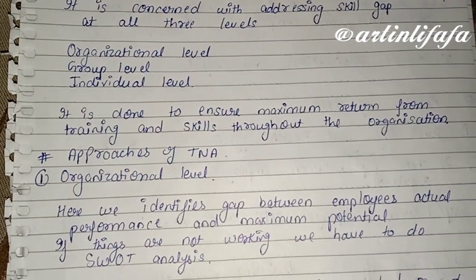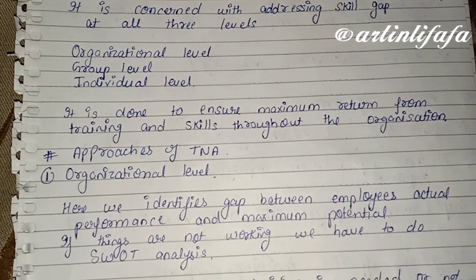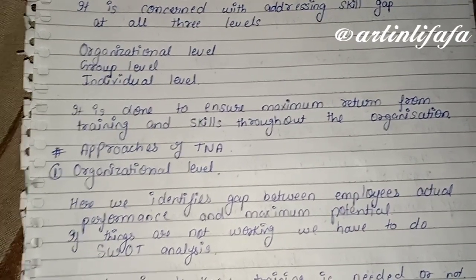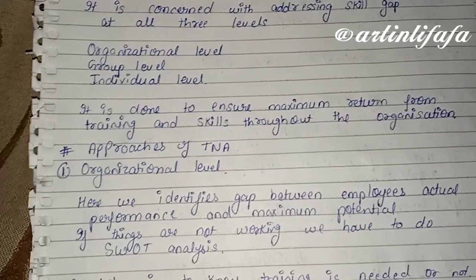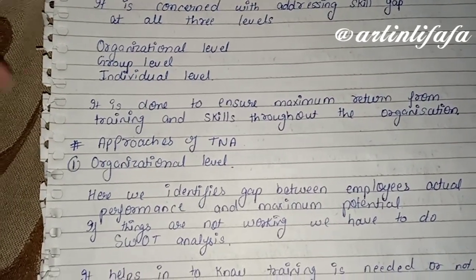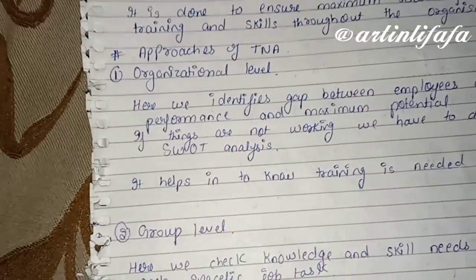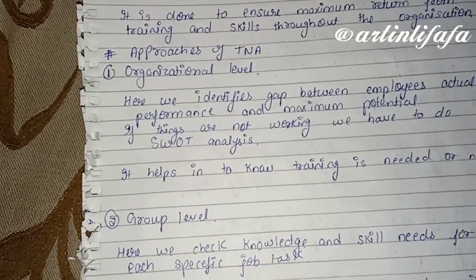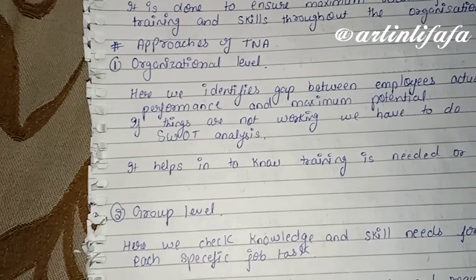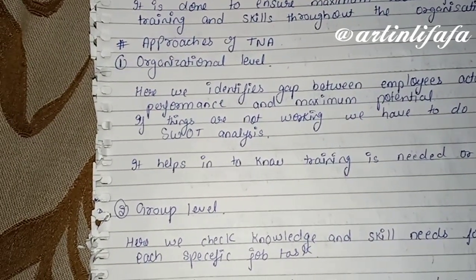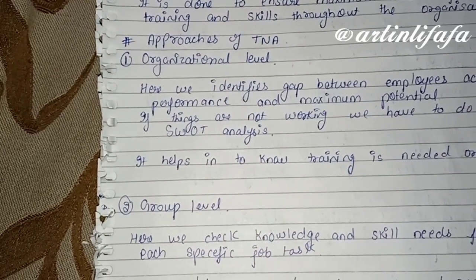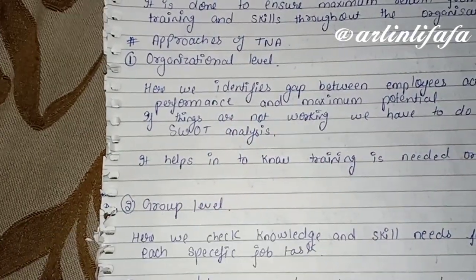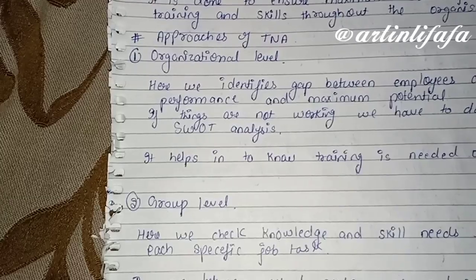We do this so that our training outcome will be good, and the need will be fulfilled. These three training approaches are called organizational level, group level, and individual level. At the organizational level, we identify the gap between employee actual performance and maximum potential.